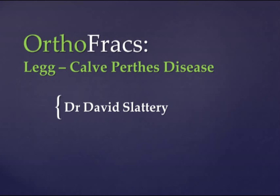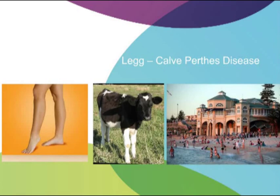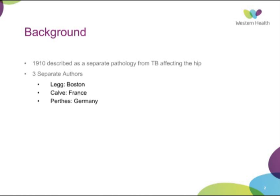Good morning everyone. This morning I'm talking on Legg-Calvé-Perthes disease, a common condition of childhood. This condition was described in 1910 concomitantly by three separate authors — Legg, Calvé, and Perthes — in Boston, France, and Germany, and was primarily described as a separate pathology from TB affecting the pediatric population.